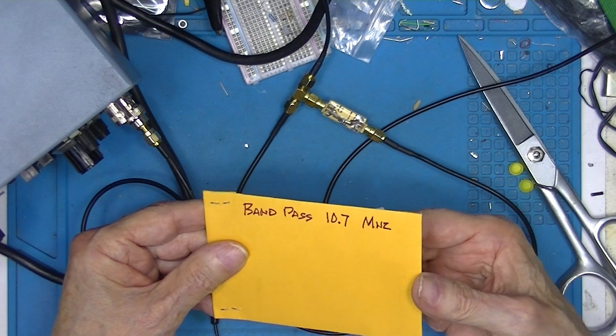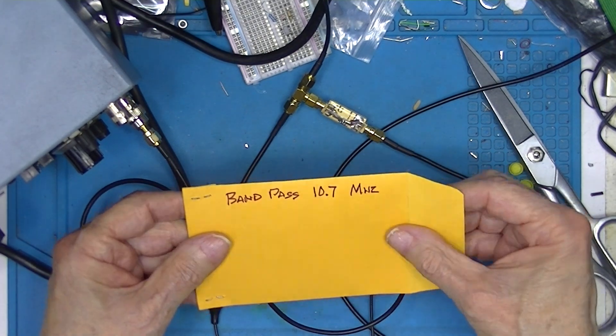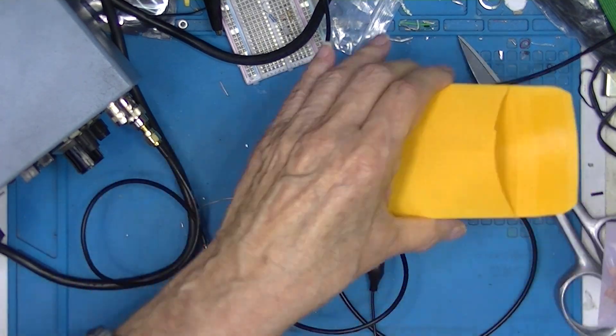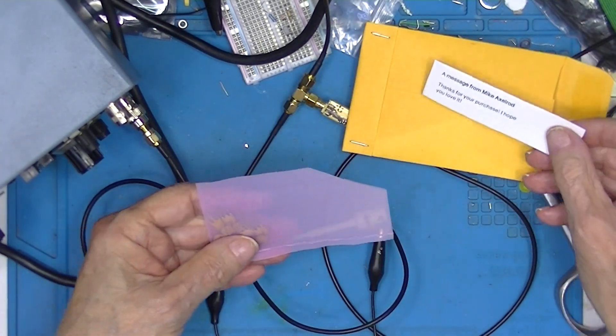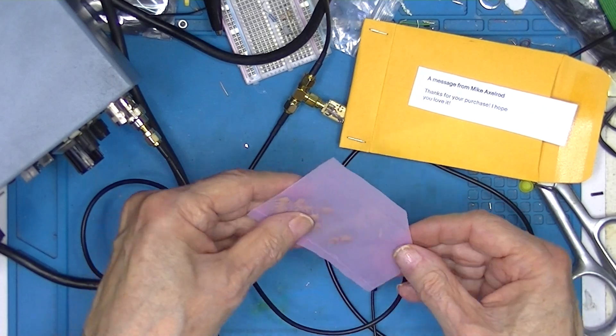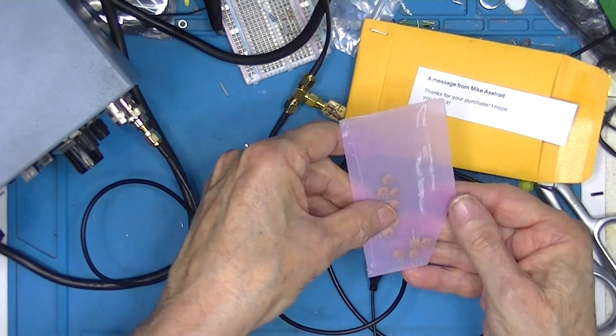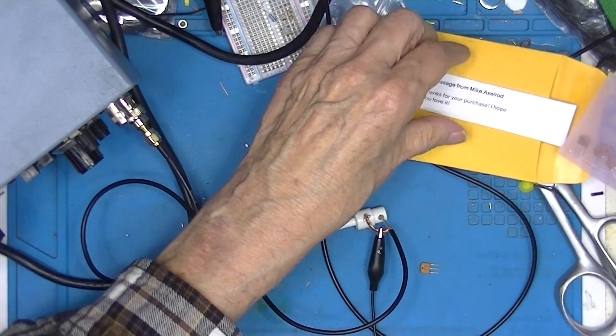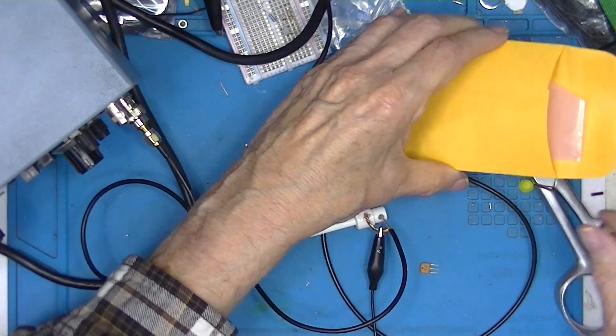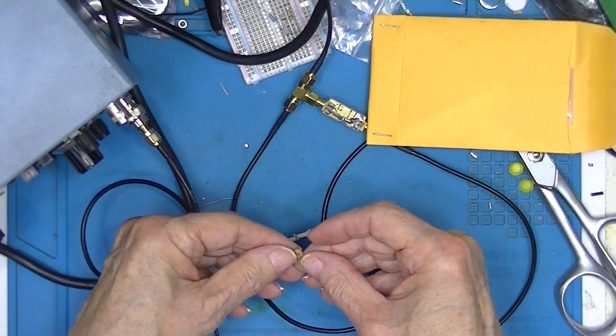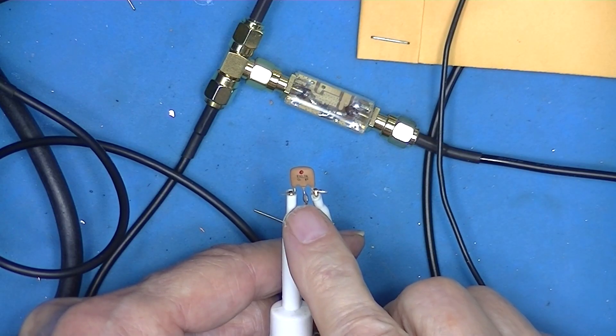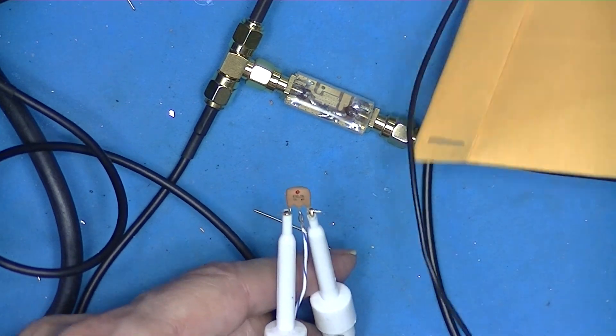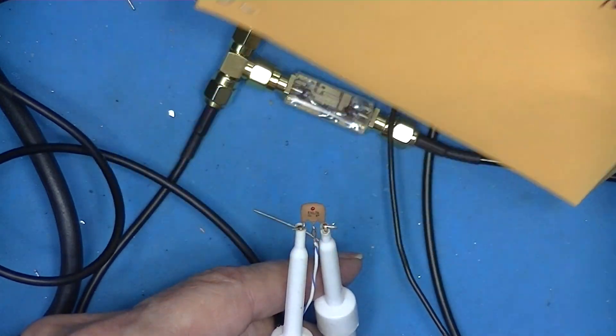I have these bandpass 10.7 MHz filters that are used in the IF of an FM radio. Now these are not tunable. I've inserted the device to be tested, which is this 10.7 MHz bandpass filter.